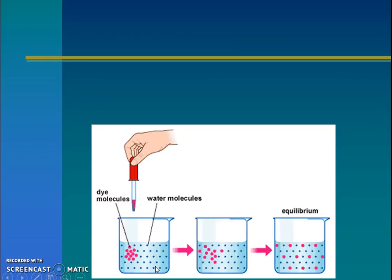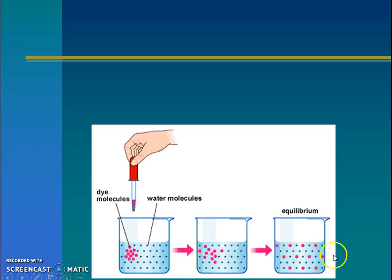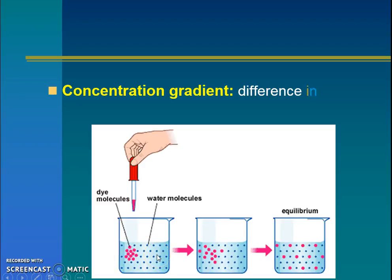Here's another example of diffusion. We have someone dropping a little bit of red food dye in a cup of water. They are going to move from where there's a high concentration of the red food dye molecules to where, over time, they'll spread until they reach an equal amount everywhere and it'll look a little bit more pink throughout. We call this difference initially — from when there was a high amount to where there's a low amount — a concentration gradient.